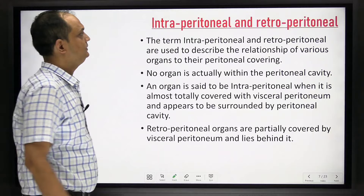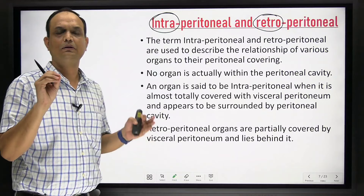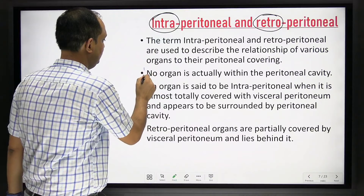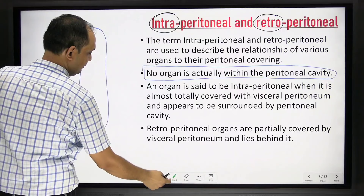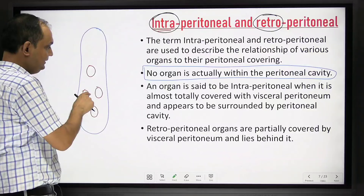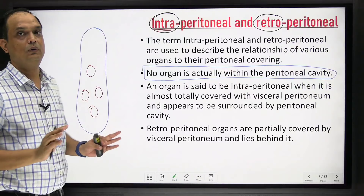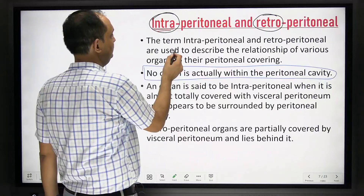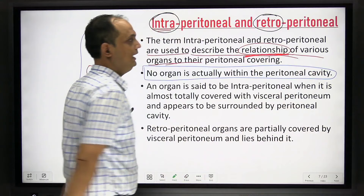Now we move to the terms intraperitoneal and retroperitoneal. A very important basic point: no organ in the body is actually inside the peritoneal cavity. These terms describe the relationship of various organs to the peritoneal covering — not their physical position inside the cavity. We use intraperitoneal and retroperitoneal as relative terms based on this relationship.